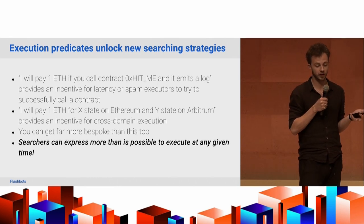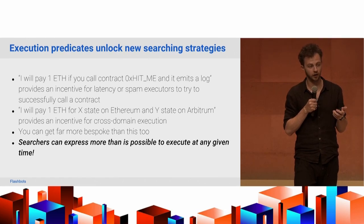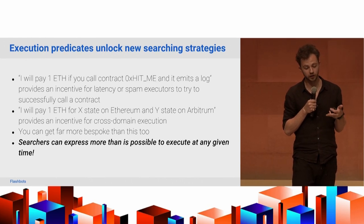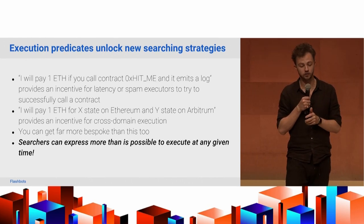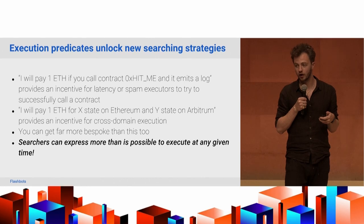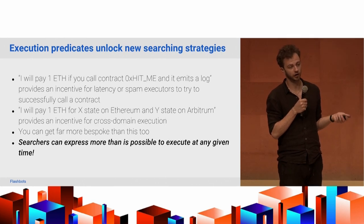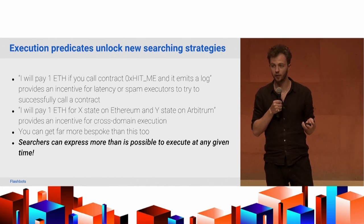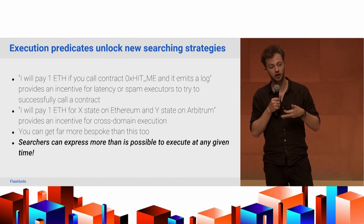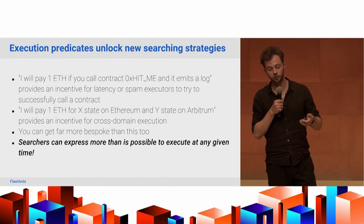Or cross-domain: I want to pay for X state on Ethereum and Y state on Arbitrum — giving an incentive for atomic execution across two different domains. Since you're programming this in Solidity as a smart contract, you can get as bespoke as you want with these execution predicates. Users can express conditions more complicated than anything the market currently supports, which either incentivizes collaboration to execute on these conditions or incentivizes creation of new infrastructure to support more complicated types of predicates.